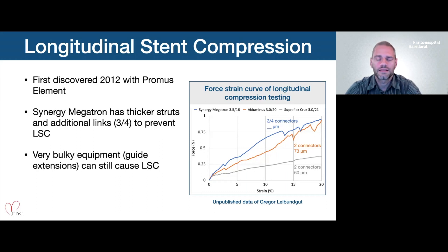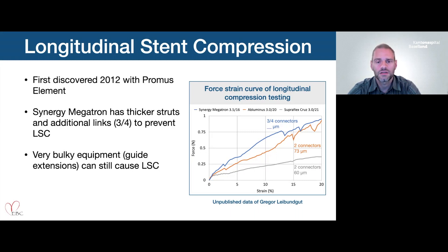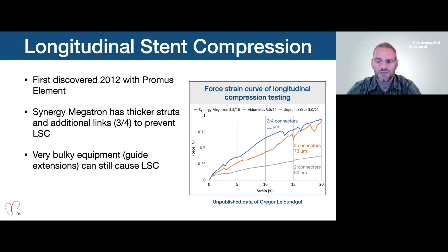However, the stent at the proximal end got longitudinally distorted. Longitudinal stent compression (LSC) is a complication first discovered in 2012 with the PROMUS Element design, which was a two-connector design. The Synergy Megatron has thicker struts and additional links — three throughout the body and four at the proximal two hoops — to prevent LSC. But with very bulky equipment such as guide extension catheters, you can still cause longitudinal compression. As we know, LSC is a function of the number of longitudinal connectors.